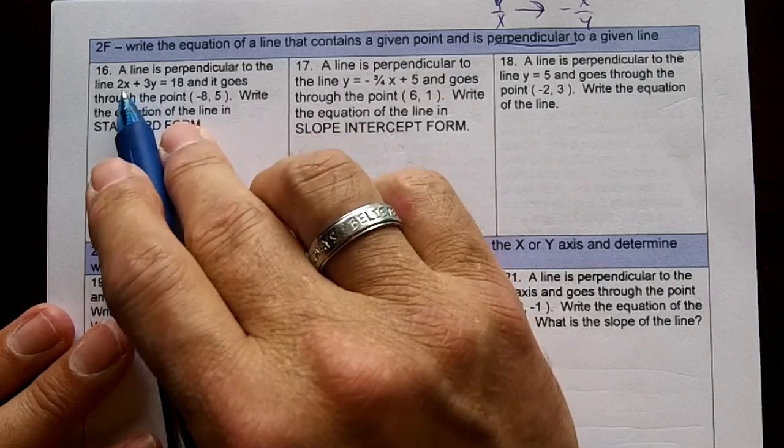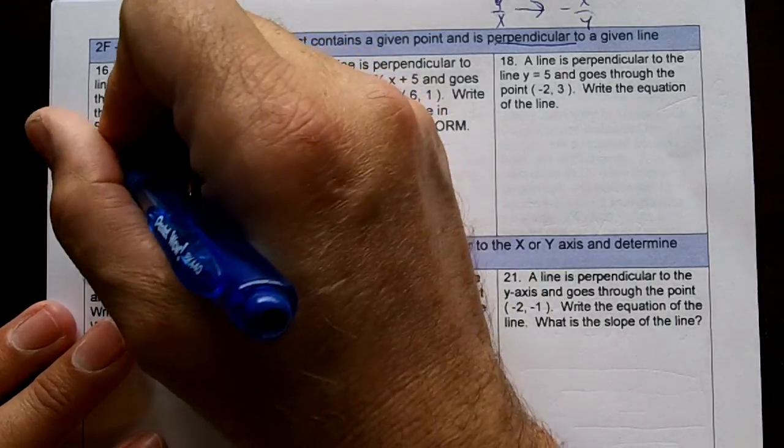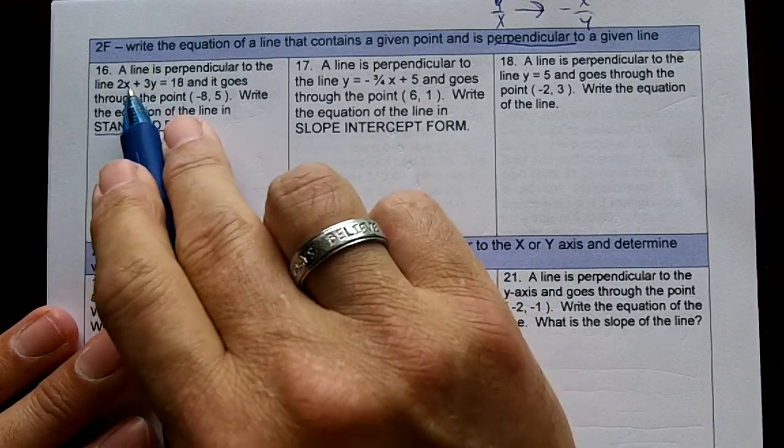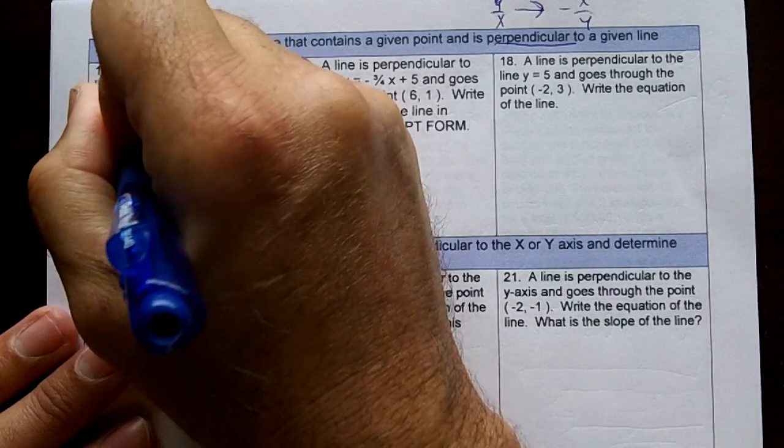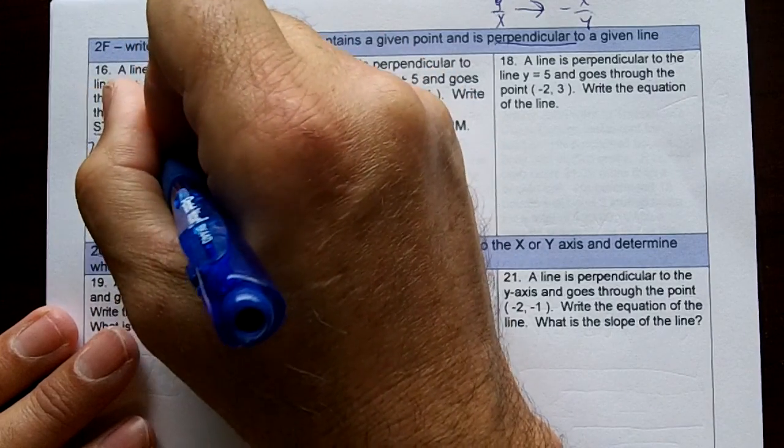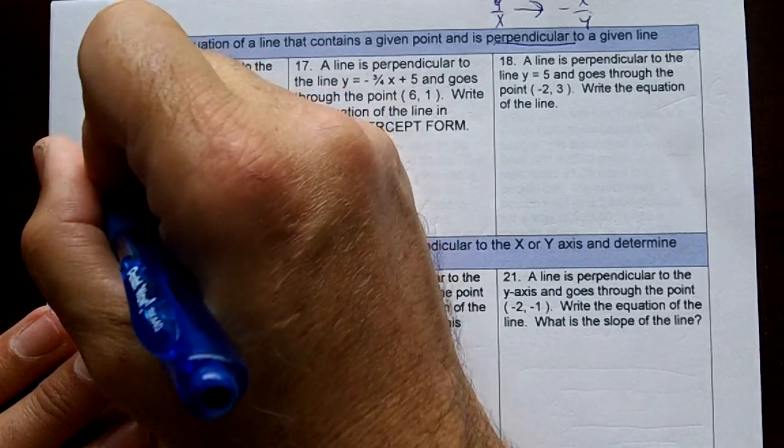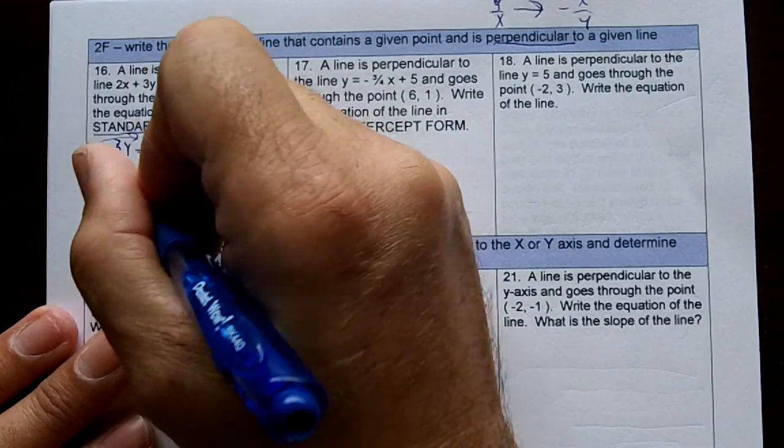So we have a line right here. We've got to find the slope, and we've got to write through this point and write it in standard form, making it standard the toughest because you've got to get rid of the fraction. So let's take this equation, 2x plus 3y equals 18. We've got to find the slope, so let's put it in slope-intercept form, move the 2x over, and now then I'm going to divide by the 3.